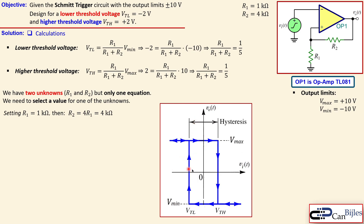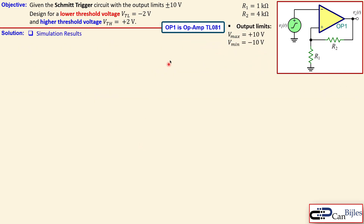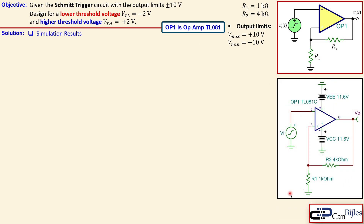We now have our input versus output characteristic plot. The blue line shows the transition from the high stage to the low stage at threshold voltage +2V (high), and going back from the low stage to the high stage at -2V (low threshold), avoiding repeated triggering. Now let's look at what we need to do in the simulator. In the simulator circuit you see the 4 kΩ and 1 kΩ resistors we calculated, the input voltage, and the output voltage measurement.